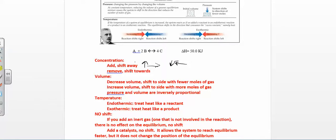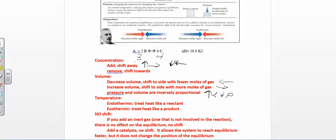You can also change the volume, which will also affect the pressure. If you decrease the volume, you want to shift to the side that has fewer moles of gas — now you don't have as much space, so you want fewer molecules floating around. For example, if you have three moles of reactants (one plus two) and four moles of products, and you decrease the volume, you go towards the left. If you increase the volume, you go to the side with more moles of gas, so you'd go towards the right. Remember that pressure and volume are inversely proportional, so increasing volume is the same as decreasing pressure. To raise the pressure, go to the side that has more moles of gas.